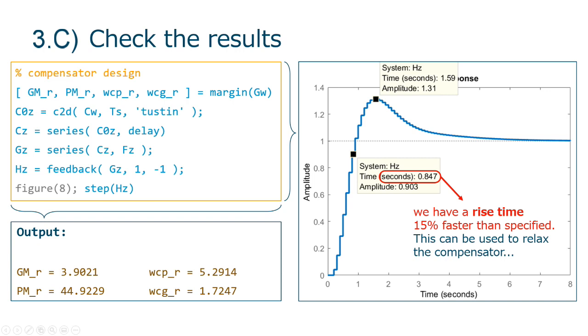Additionally, we have a gain margin of 3.9, around 12 dBs. What do you think of this? Please comment on your report.